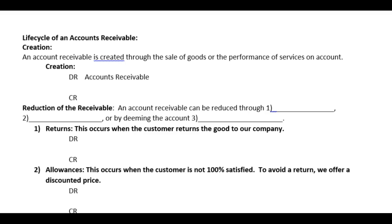What creates the accounts receivable? We create an account receivable through the sale of goods or the performance of services. When we sell goods, we consider that sales revenue, so we credit sales revenue. If you perform a service, any time we perform a service we get to recognize the revenue. Per revenue recognition, we recognize revenue when the service obligation is complete — that is the basic concept. So we have our debit to AR and our credit to either sales revenue or service revenue.